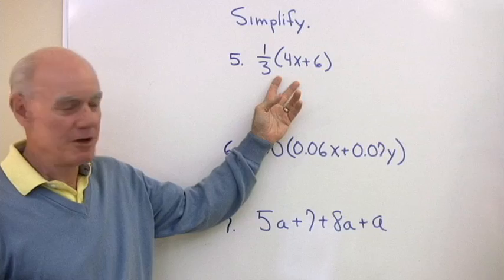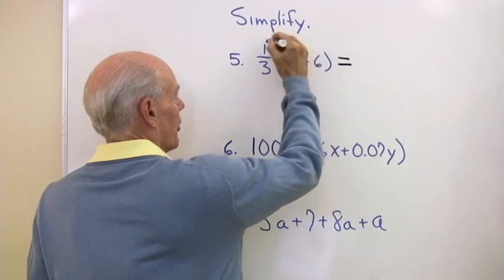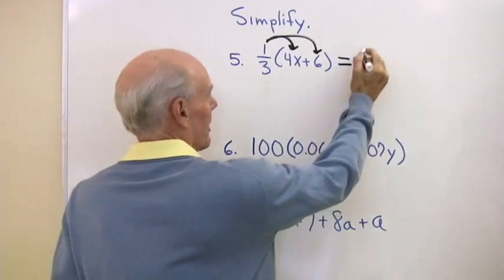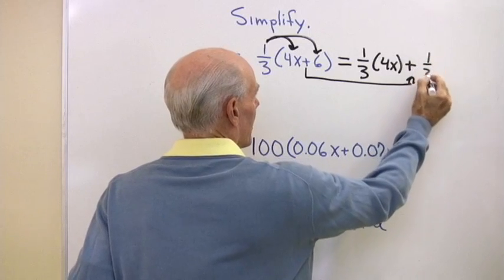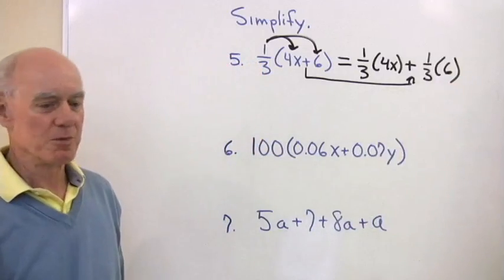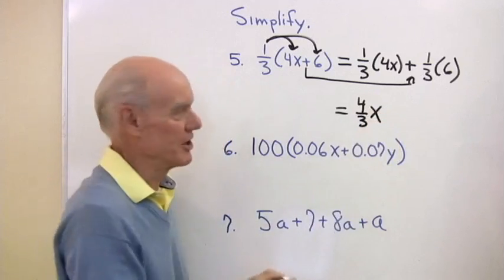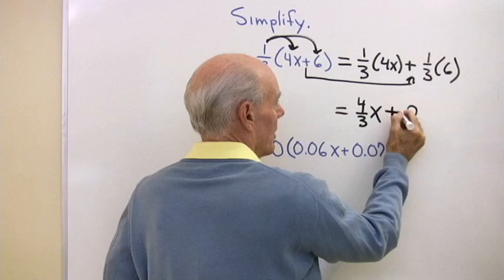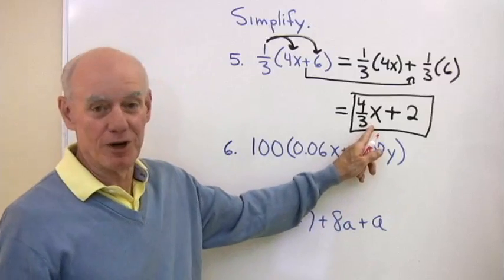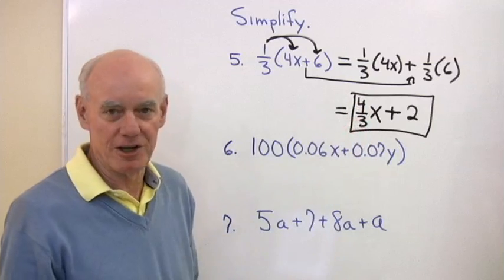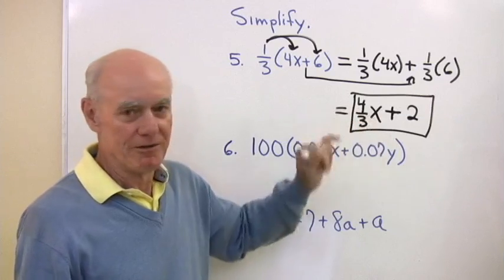Here we simplify by applying the distributive property: 1 third times the quantity 4x plus 6. I distribute 1 third over both terms — 1 third times 4x gives 4 thirds x, and 1 third times 6 is 2. So the result is 4 thirds x plus 2. Note that 4 thirds x and 4x over 3 are exactly the same thing, since multiplying by 1 third and dividing by 3 are equivalent.